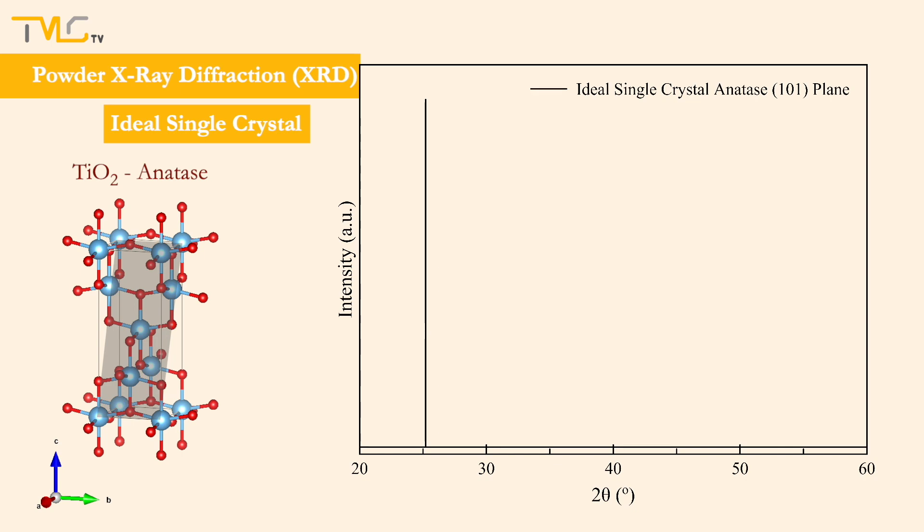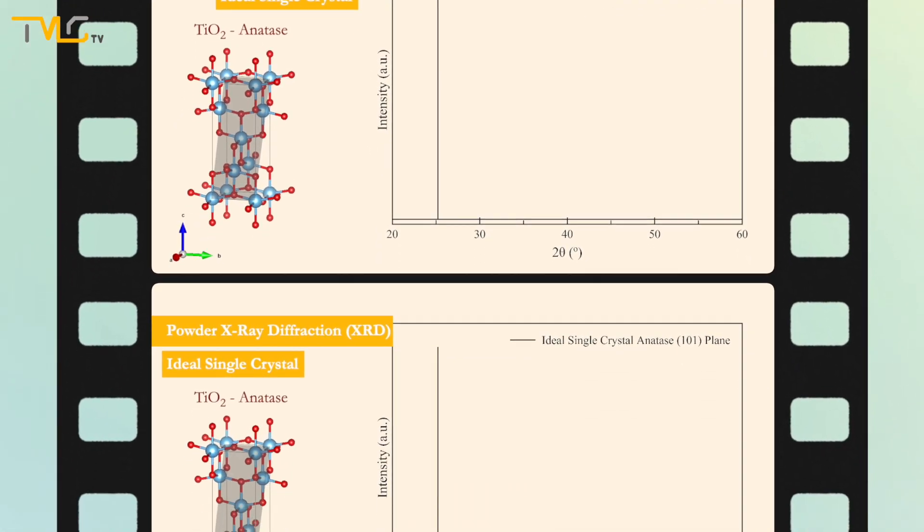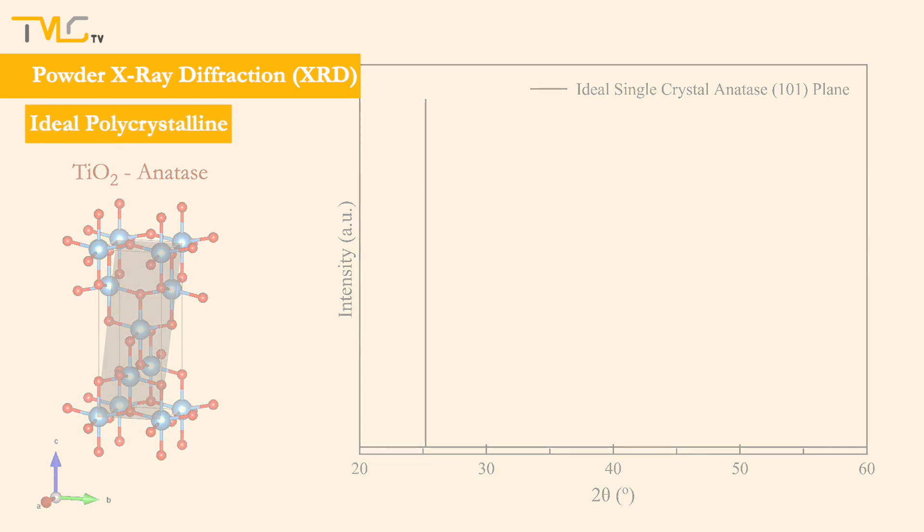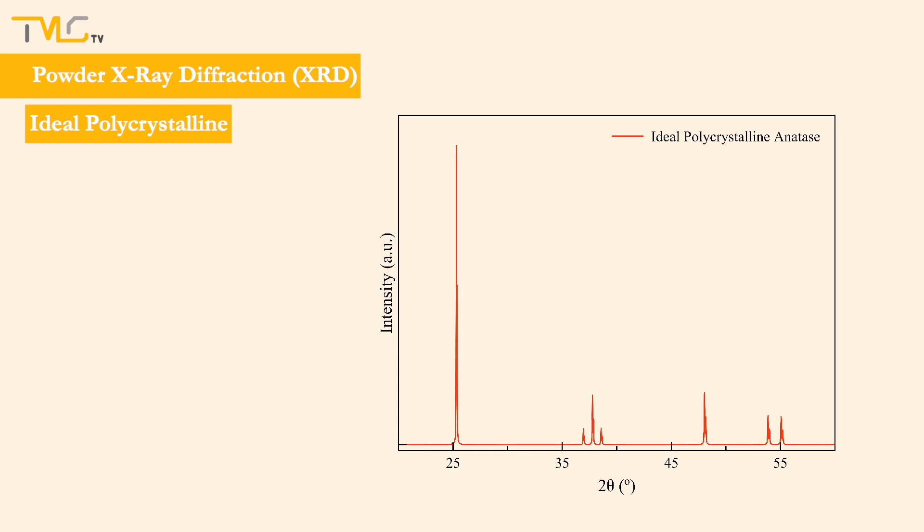However, as the level of intensity of these assumptions signal, this scenario is quite far from reality. So, let's take a few steps forward towards reality, and assume that we have an ideal polycrystal anatase, and our X-ray diffractometer still doesn't introduce any systematic errors to our data. In such a case, our data would look like this.